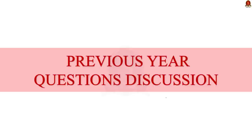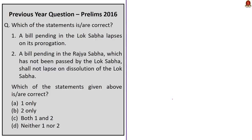Let us take up the first previous year question for today. Here, two statements regarding the lapsing of a bill in parliament are given. We have to find which of the following statements are correct. Let us take up the first statement: 'A bill pending in the Lok Sabha lapses on its prorogation.' This statement is obviously wrong because prorogation means the action of discontinuing a session of parliament without dissolving it. If you know this basic fact, you can easily eliminate statement 1.